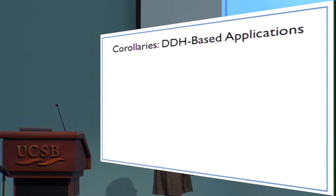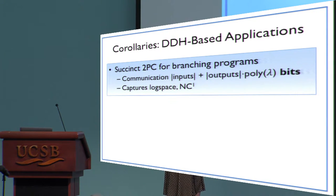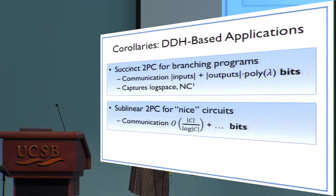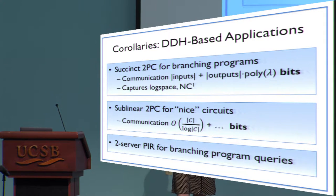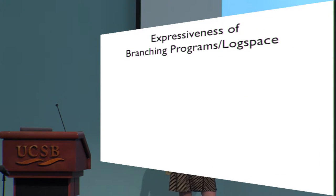As a function of this core result, we get a collection of different applications following from DDH. The first is secure two-party computation — for the class of branching programs, we can essentially match what you could hope for in terms of communication. Going beyond branching programs, for a much richer class of circuits, we can use the branching program as a mini tool to shape communication complexity to sublinear, breaking the circuit size barrier. An additional application is two-server private information retrieval, where a client makes secret branching program queries onto a database.